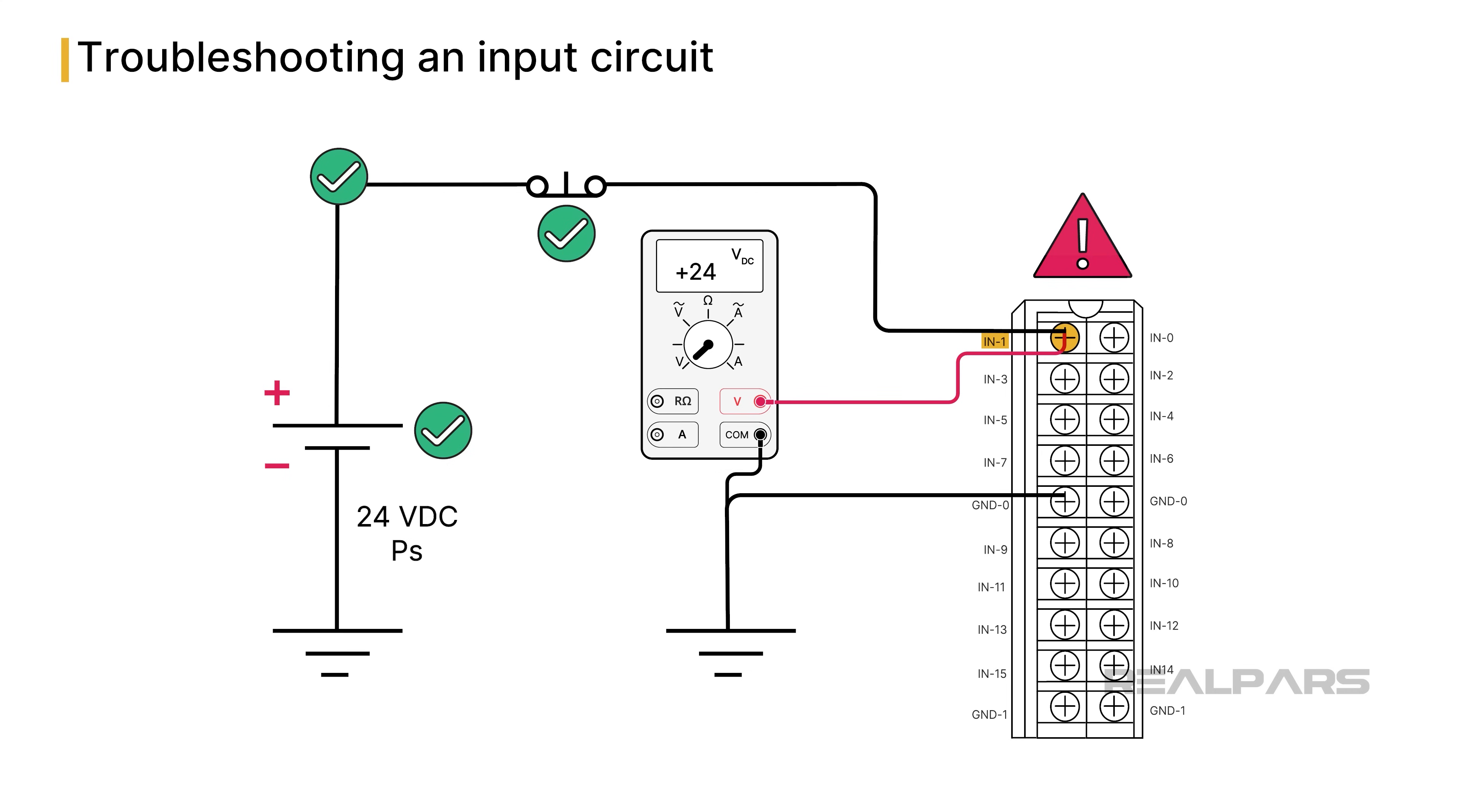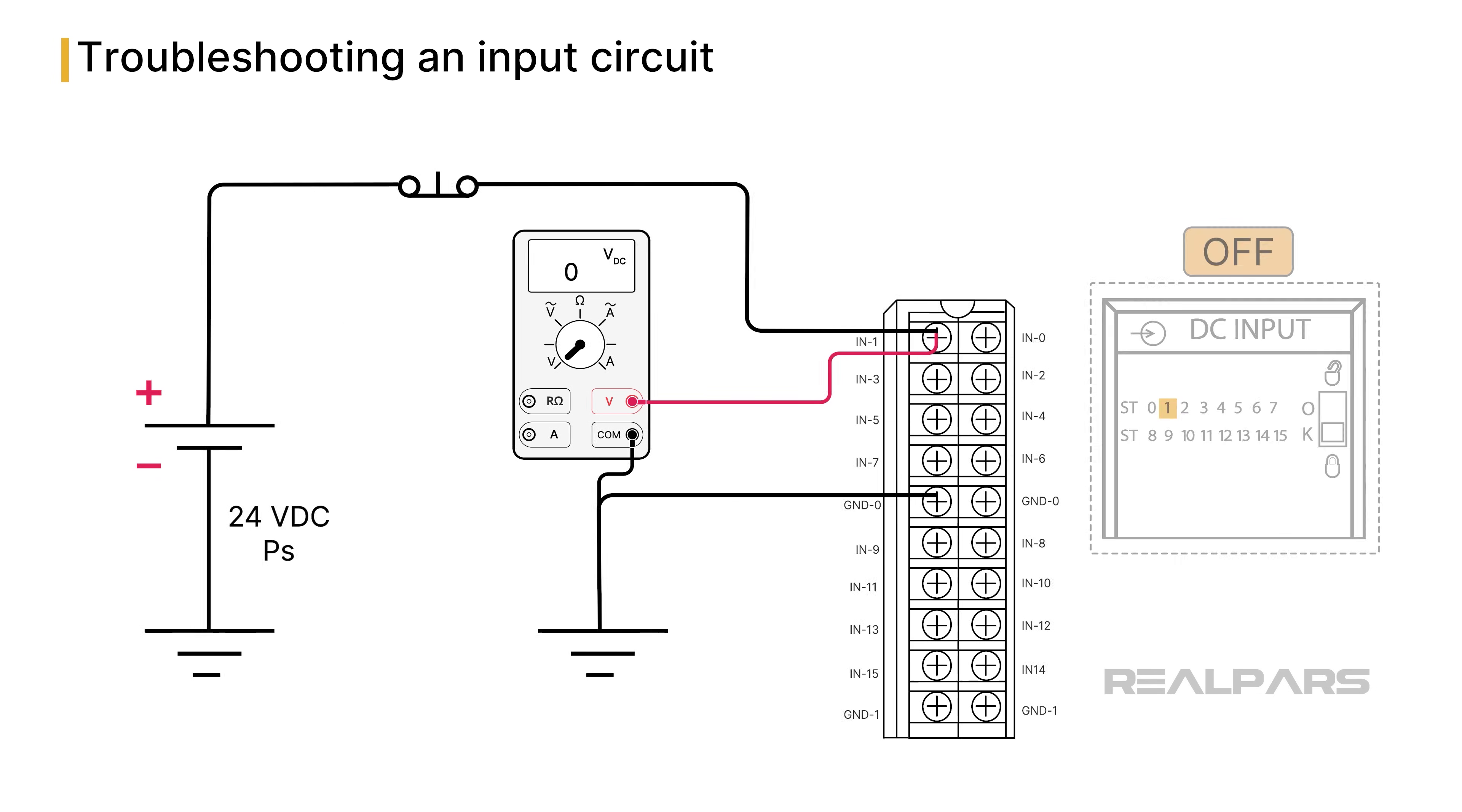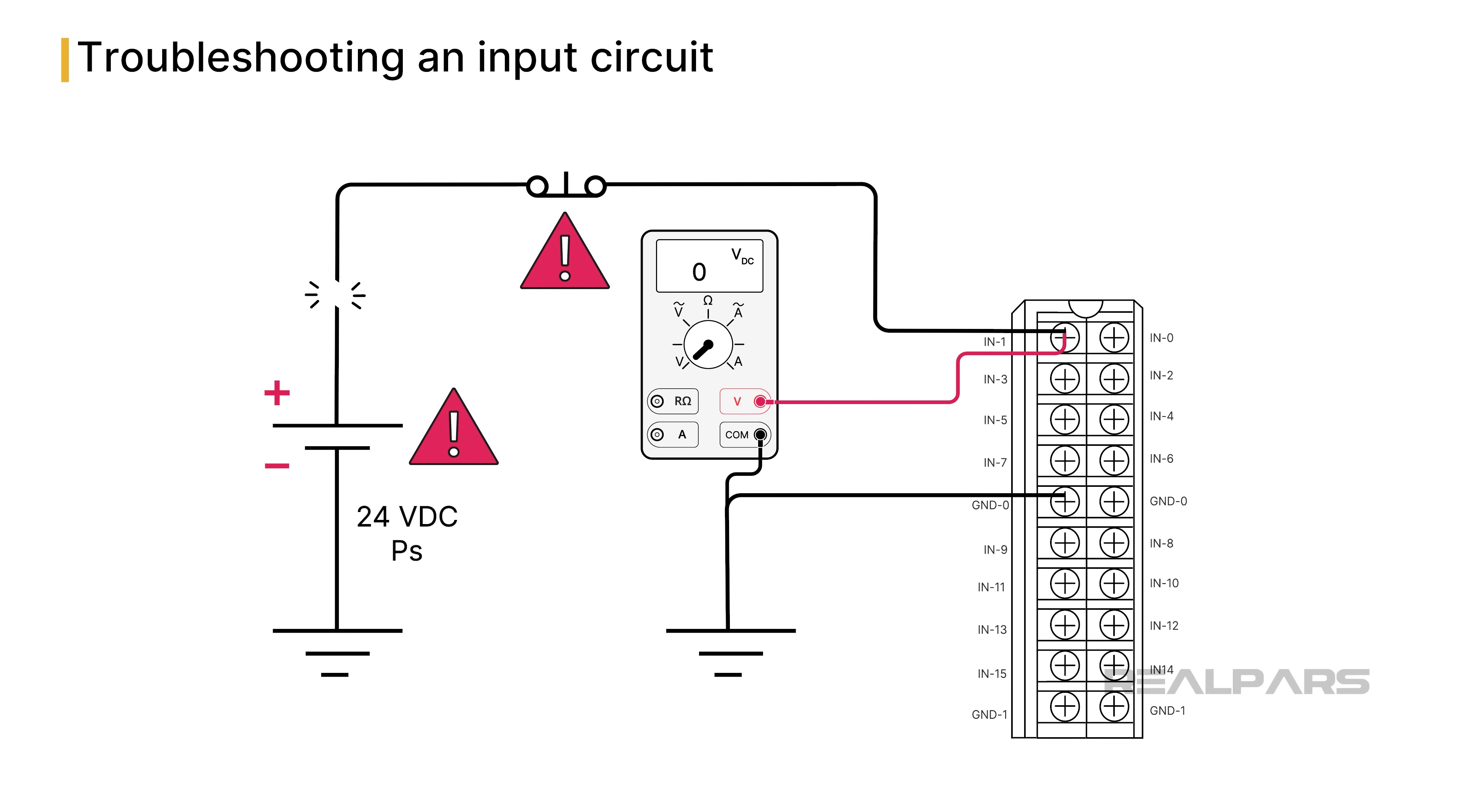The suspected fault is the module. If the voltmeter reads 0 volts DC, that explains why the LED1 is off. We might have a defective switch, power supply, or a broken wire.